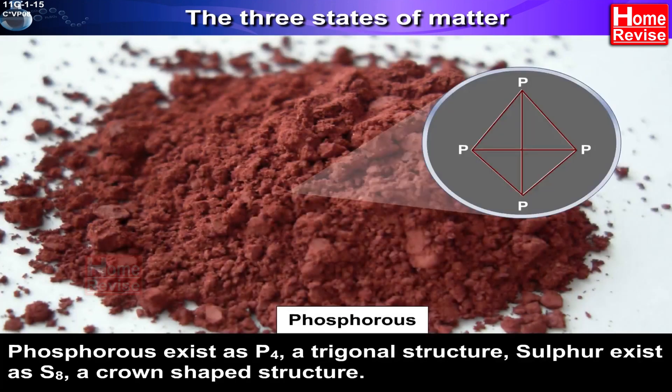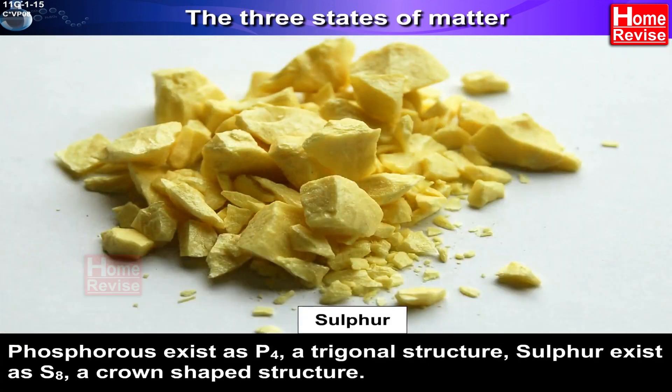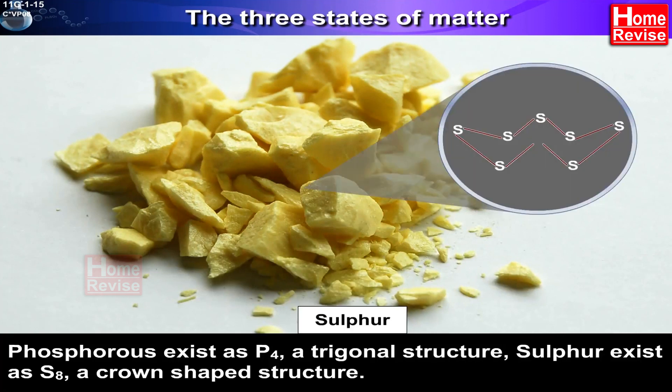Phosphorus exists as P4, a trigonal structure. Sulfur exists as S8, a crown-shaped structure.